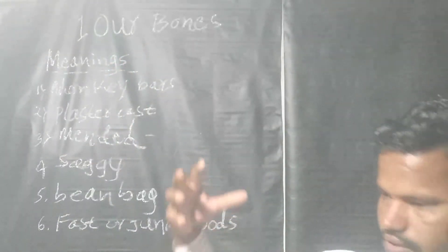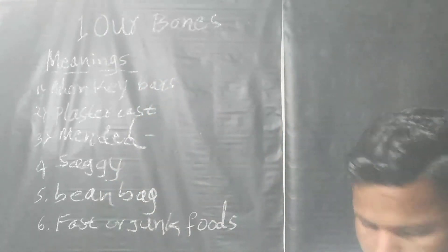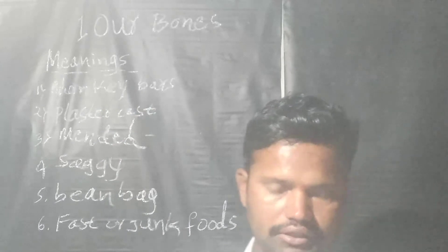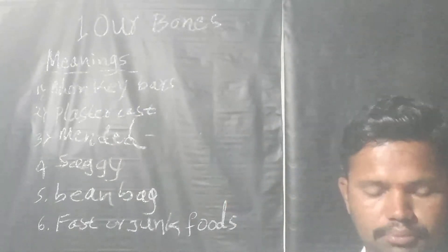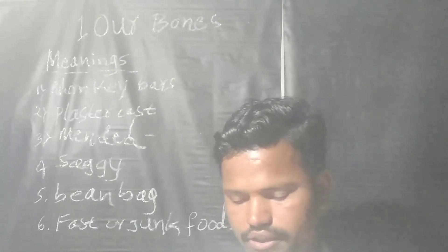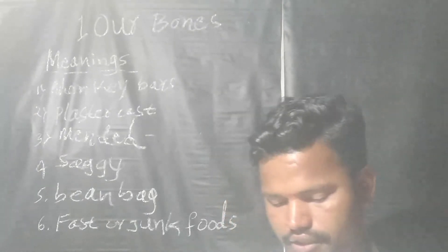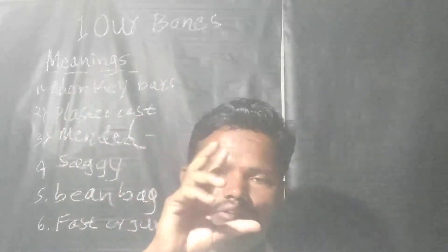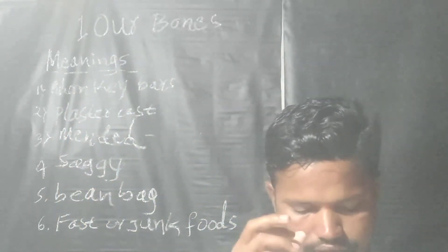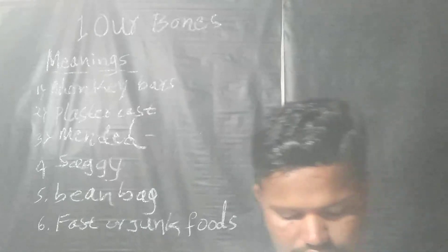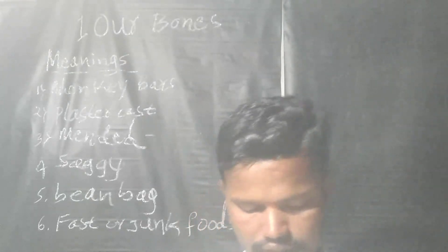Before going to the chapter, we will first discuss some meanings. The first word is 'monkey bars.' Monkey bars means a series of bars on fixed posts on which children can play, climb, and jump like monkeys. You may have also observed this type of bar in your school.